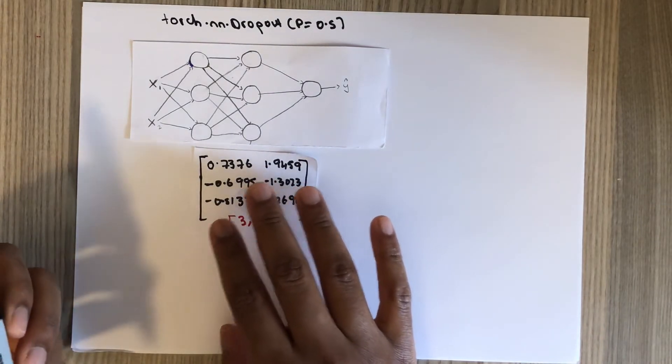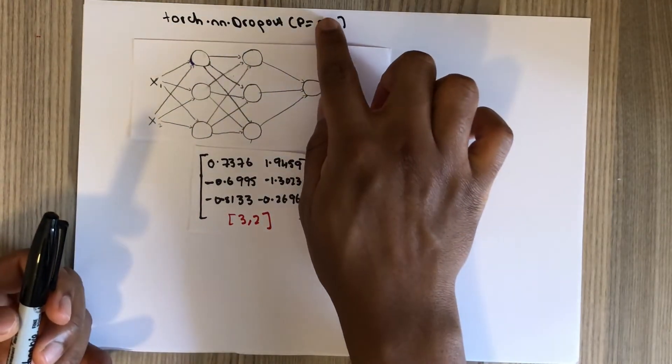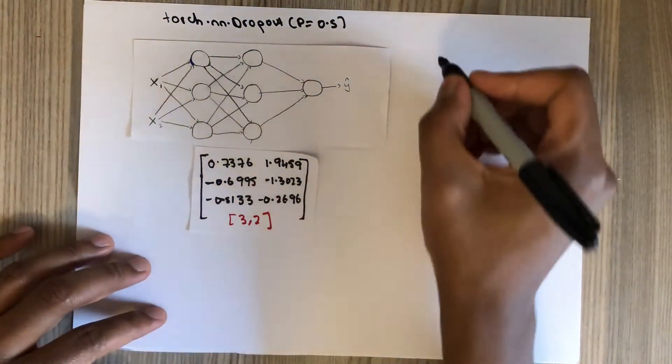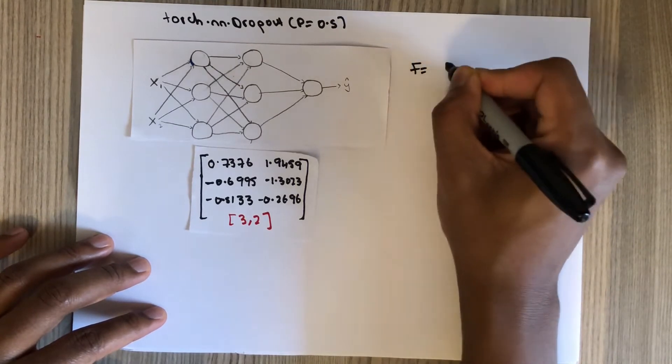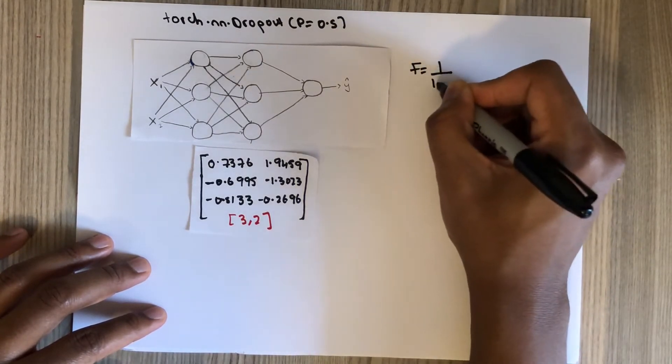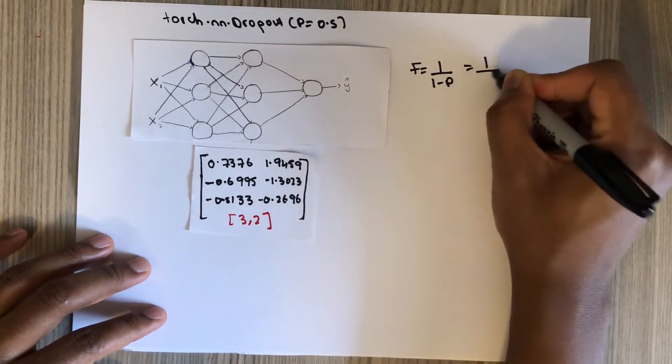They are going to become some of the values will be converted to non-zero while others zero, depending on this probability. But before we do that, we need to calculate something called scale factor f, which is 1 divided by 1 minus p. For this example it is 1 minus 0.5, which is 2.